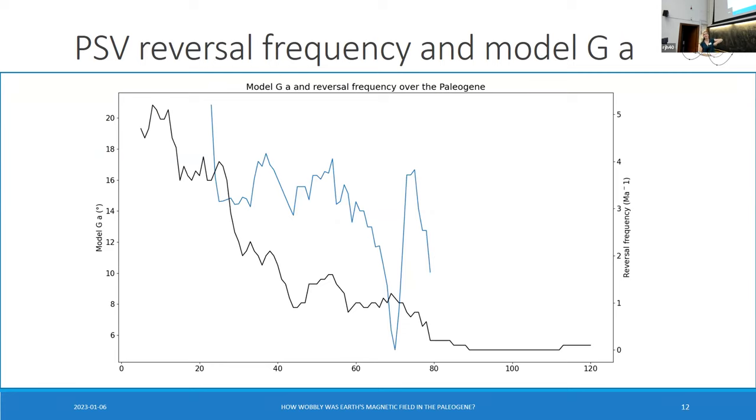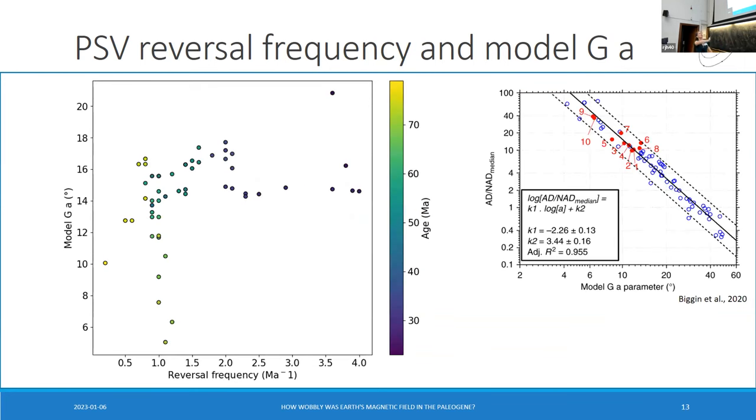But it's tantalizing. If we look at the reversal frequency over time, and we look at the Model G-A over time, we do start to see some kind of relationship. And yes, the error bars are very high, but it's tantalizing. And why do we care about this? Well, this is really interesting because using the Model G-A parameter, we can get the dipole dominance. So there's actually a really simple relationship between axial dipole dominance and the non-dipolar component, which is just dependent on this log A with the Model G-A parameter. So by characterizing the Model G-A parameter through time, we can work out how non-dipolar the field was at different points in time, and how that's changed over our history.